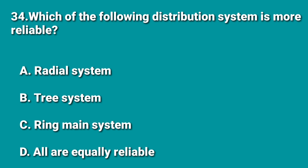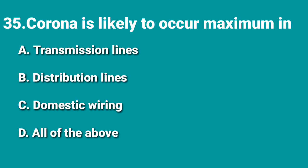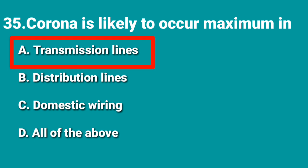Which distribution system is more reliable — radial tree system, ring main system, or all equally reliable? The ring main system is the more reliable system because it forms a ring and provides continuity of power supply. Hence C (ring main system) is the correct answer. Corona is likely to occur maximum in — A: transmission lines, B: distribution lines, C: domestic wiring, D: all of the above. Corona is a non-violent glow occurring in transmission lines under heavily or lightly loaded conditions; it occurs maximum in transmission lines only, so A is the correct answer.